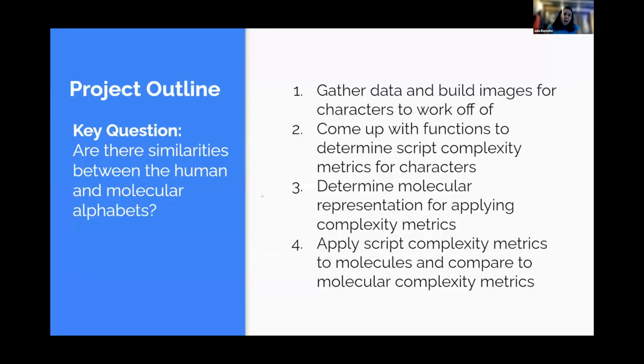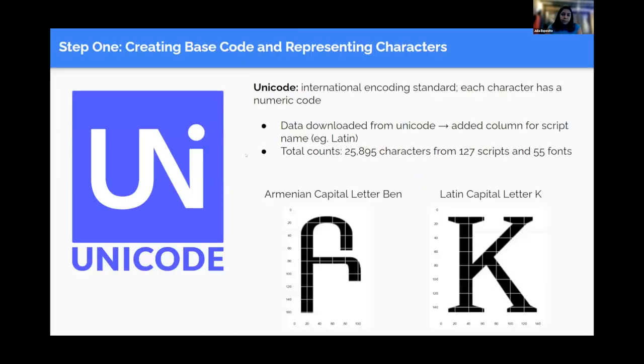I would like to now get into our actual project. The goal of our project was to understand whether there are similarities between human and molecular alphabets. We decided to do this by first looking at different characters and coming up with complexity metrics and then applying those to molecular representations. For our steps, step one, we had to gather our data and build two-dimensional images of characters. Step two, we wanted to come up with different functions to determine script complexity on these characters. Step three, we had to build molecular representations. And step four, actually applying script complexity metrics to molecules and then comparing those to the chemical molecular complexity metrics.